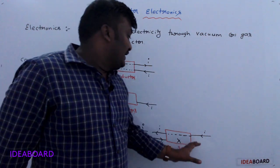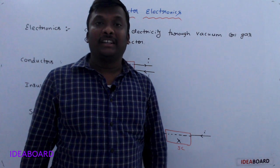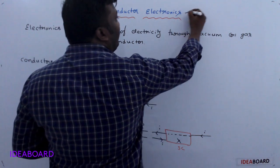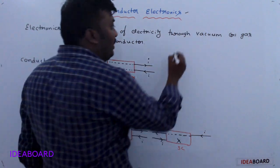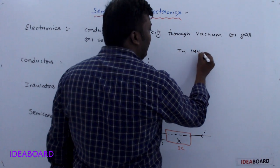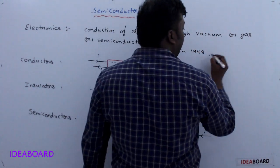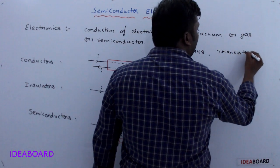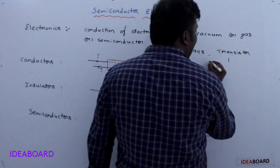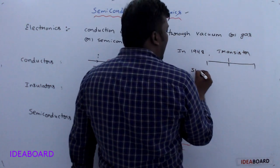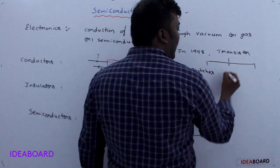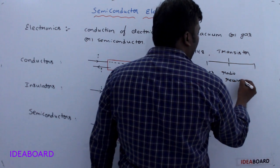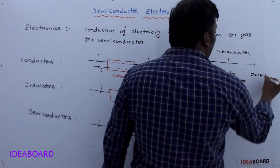This special behavior of unidirectional conduction of electricity brought many changes in the field of electronics. In 1948, scientists invented the transistor. Transistors are used as on/off switches, and they are also used as radio receivers and record players.